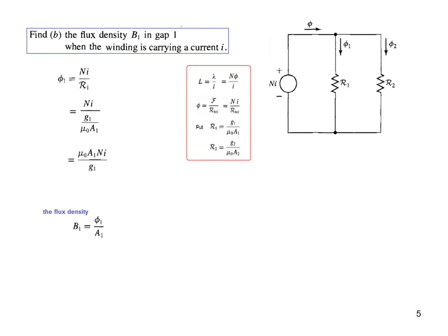Now this is for flux phi_1. Now we need to find flux density, and I'm sure you know that the flux density is flux divided by the area of cross section. So B1 is phi_1 divided by area of cross section, and plugging in the value of phi_1 from here.